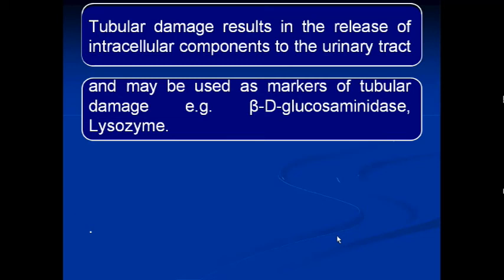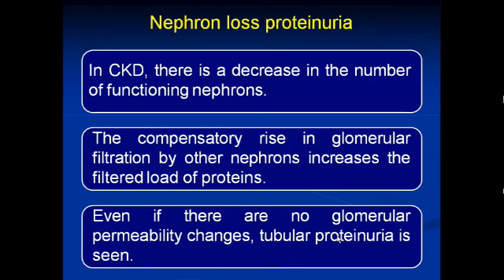When proteins escape due to a defect in the tubular portion of the nephron, that is called tubular proteinuria. The markers of tubular proteinuria are beta-D-glucosaminidase and lysozyme. In nephron loss proteinuria, seen in chronic kidney disease, there is a decrease in the number of functioning nephrons. The compensatory rise in glomerular filtration by other nephrons increases the filtered load of proteins, and even without glomerular permeability changes, tubular proteinuria is seen.